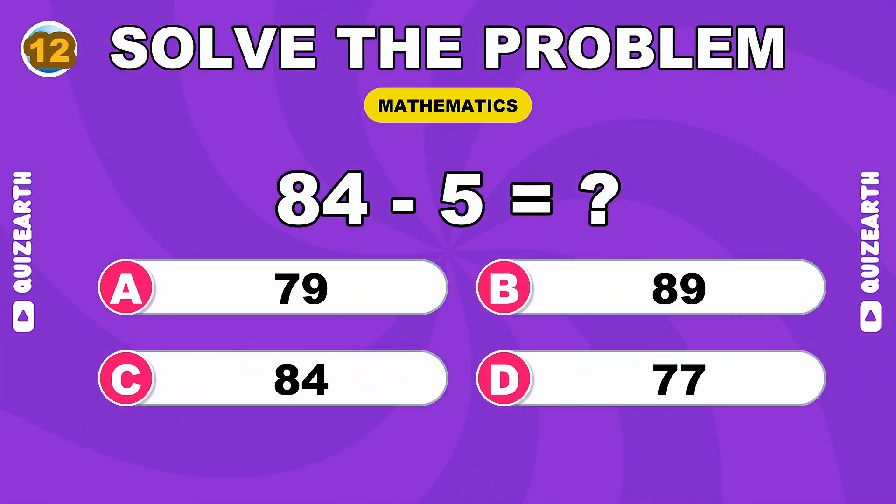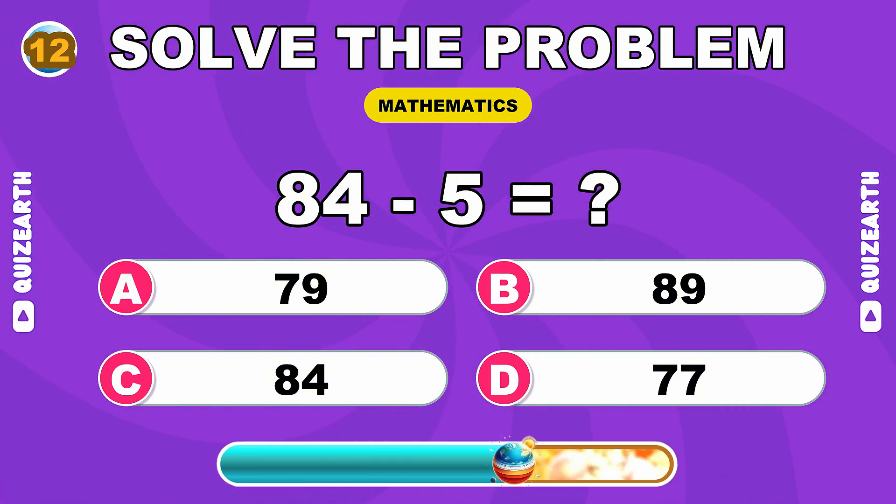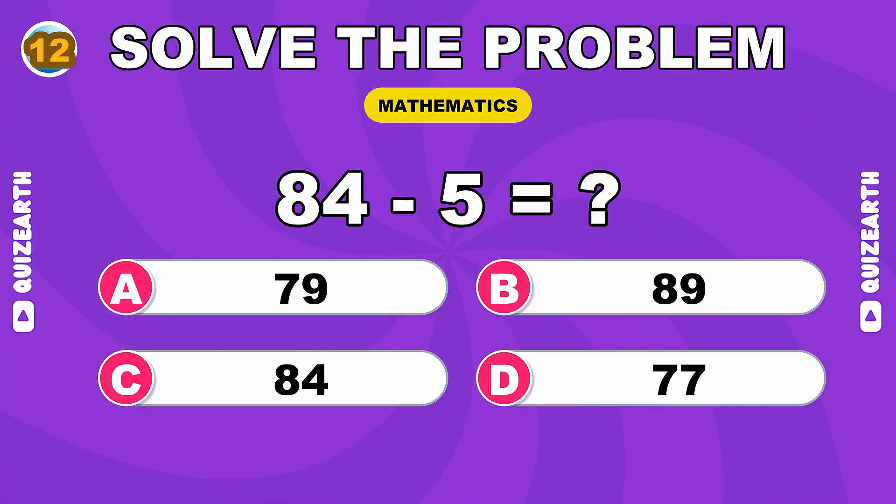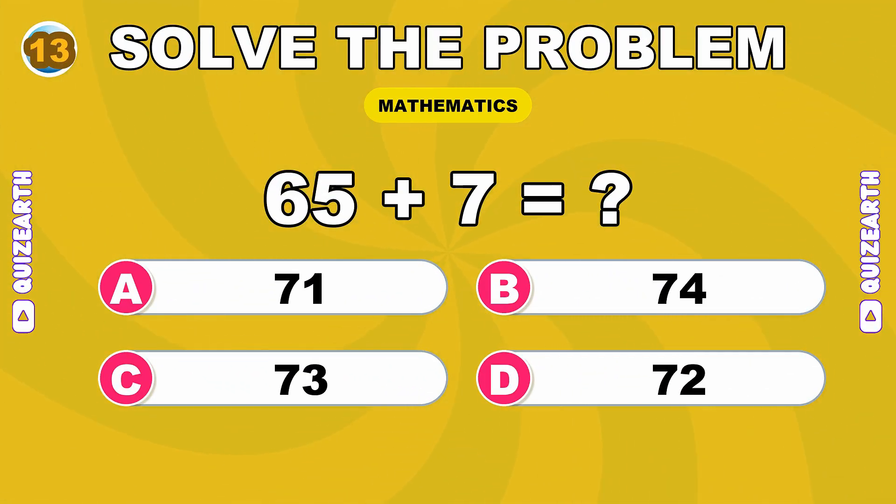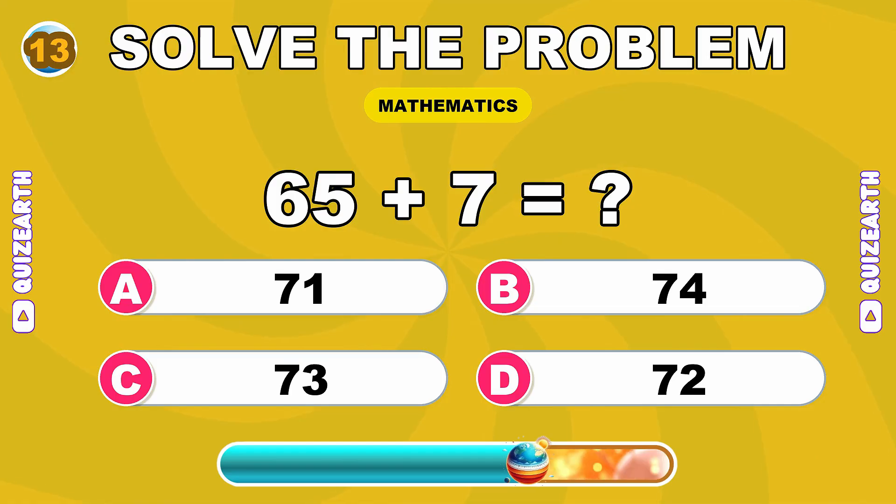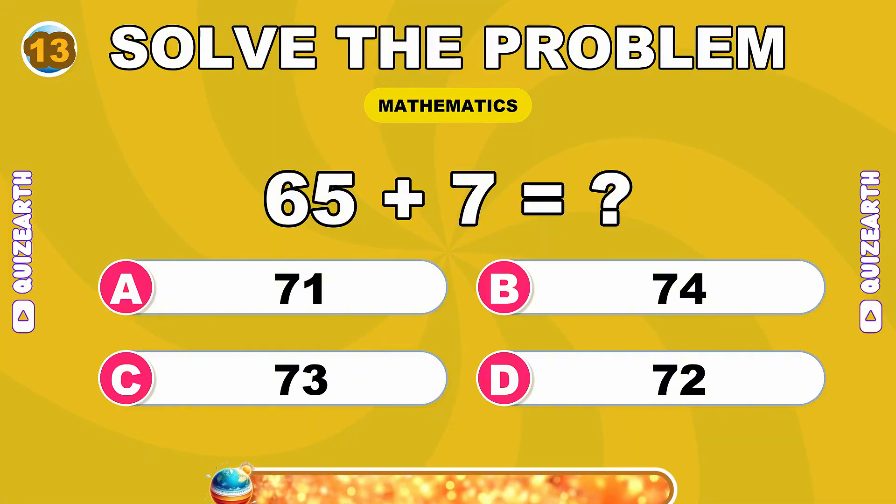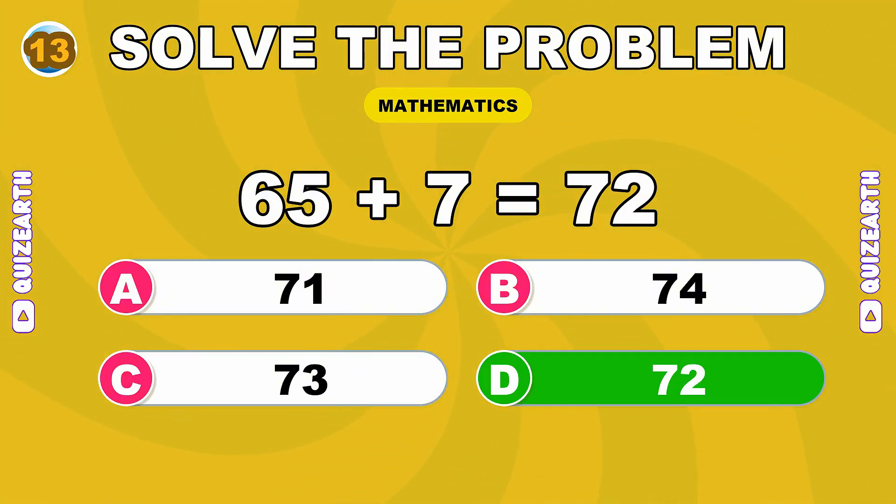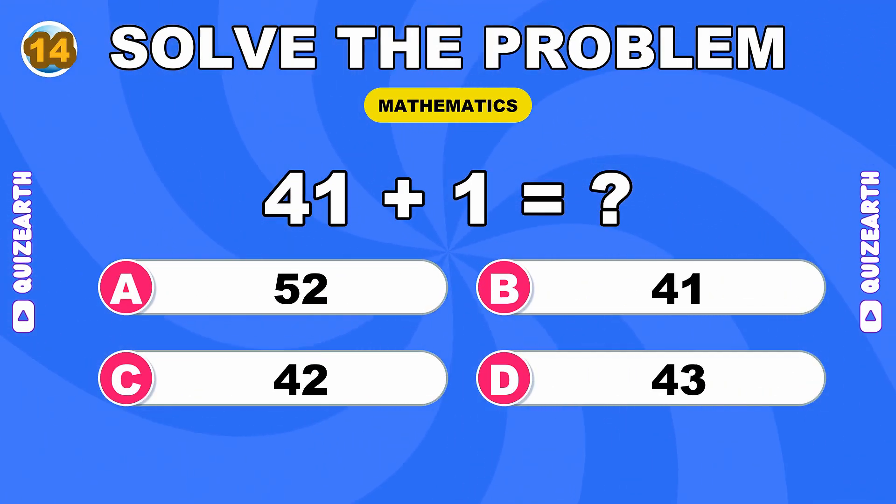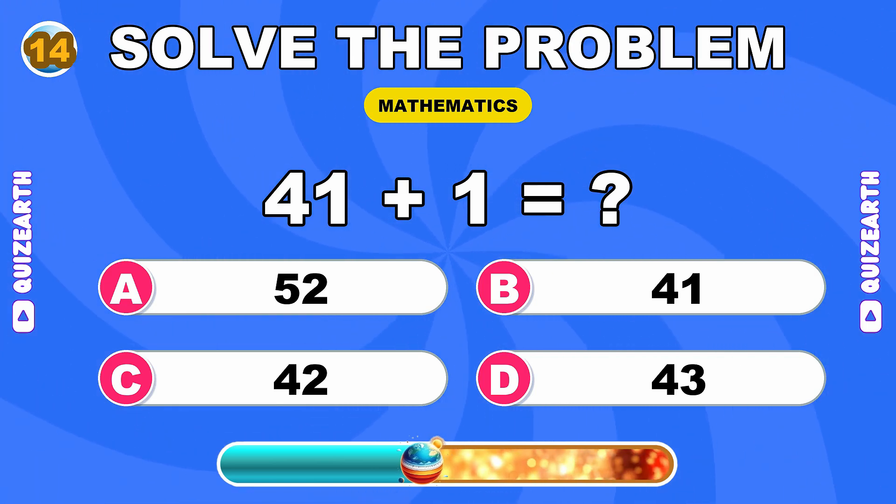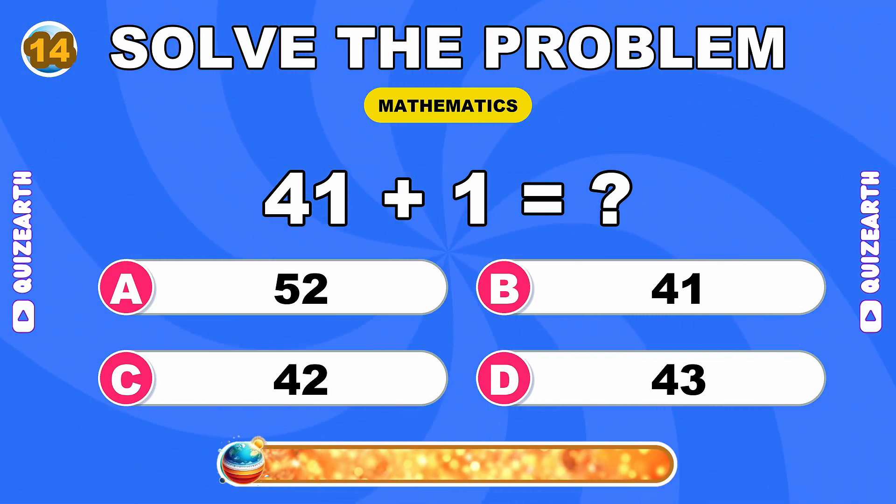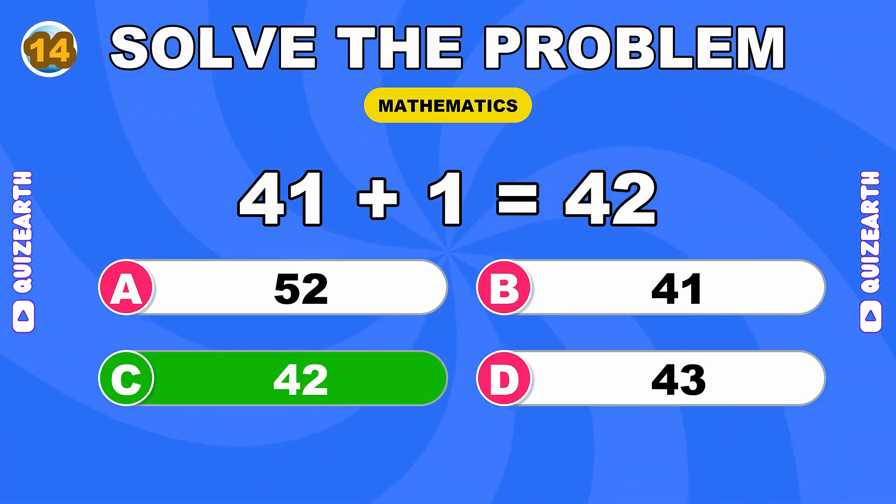You're flying, 75. What do you get when you subtract 5 from 84? Nailing it, 42.